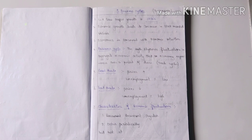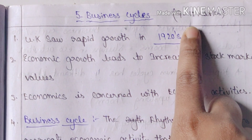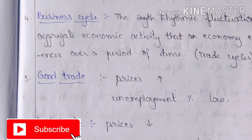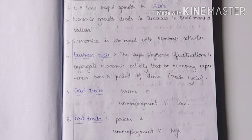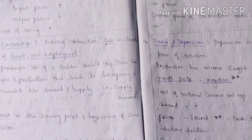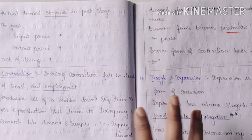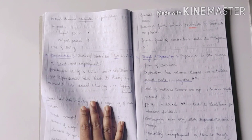Hello friends, I am here in economics. We have 9 to 12 marks in this chapter. We have the main points of this chapter in the description box. Let's start this day.